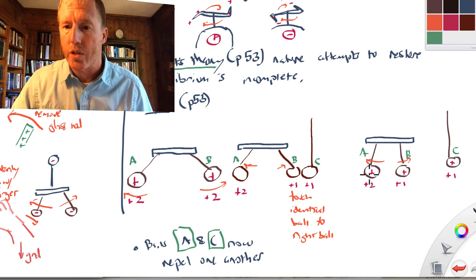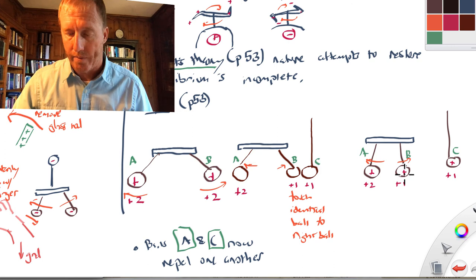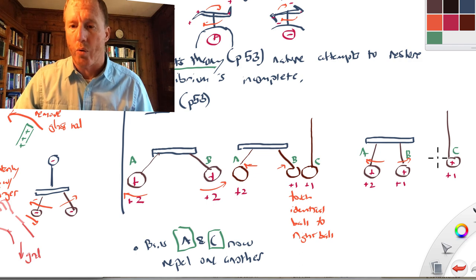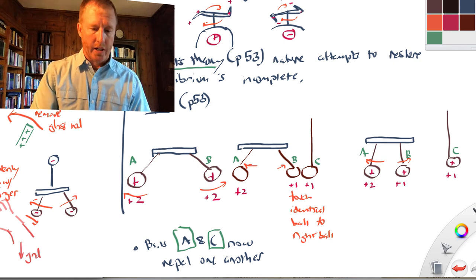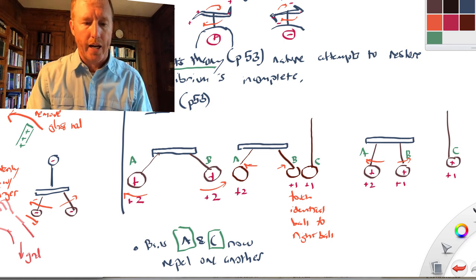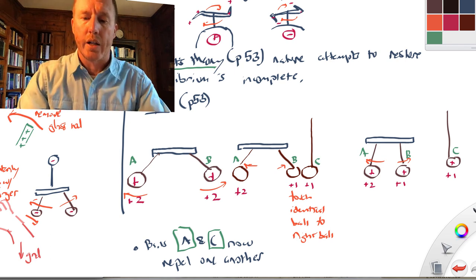Because ball A has more of this positive charge than C — they're out of equilibrium. By Nollet's theory, they should attract. But we find that balls A and C repel one another, which seems to suggest that this purely equilibrating or attractive force is not complete in explaining these phenomena. And this is something that Benjamin Franklin points out.